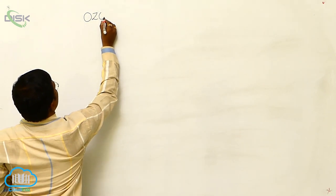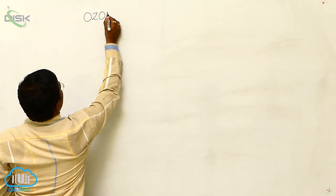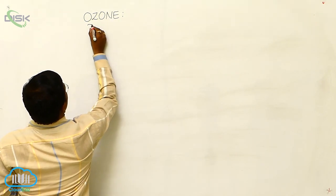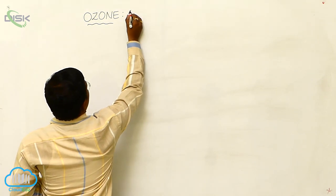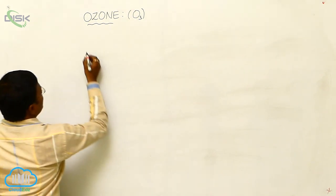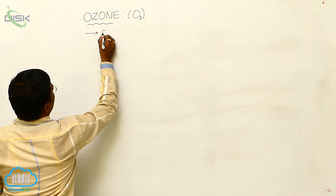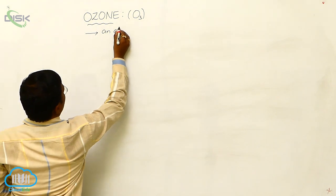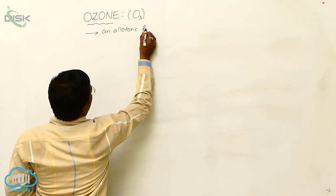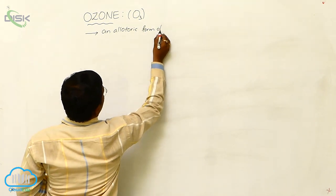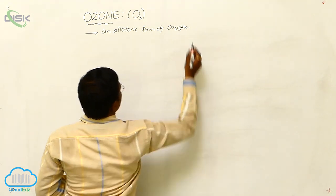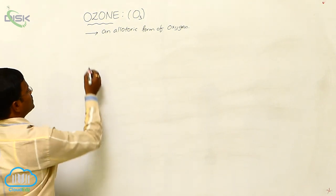Ozone, which is represented as O3, is an allotropic form of oxygen.